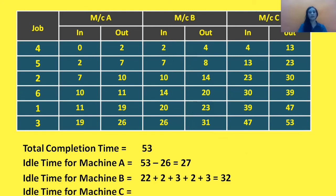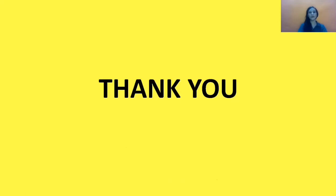For machine C, we check the idle time, which is only 4 at the start. Looking at the differences between in and out times, they are all the same with no gaps. So the idle time for machine C is only 4. This way we have calculated the minimum elapsed time and idle time for all three machines after finding the optimal sequence for n jobs three machines. I hope this video helps you understand how to sequence jobs on three machines using Johnson's rule. Thank you for watching. Please subscribe to my channel Dr. Janchal Jain, and please like, share, and comment. Happy learning!